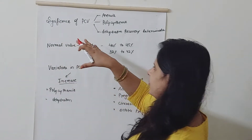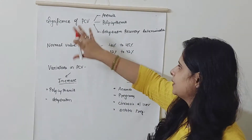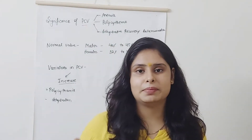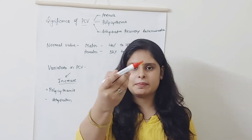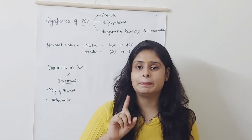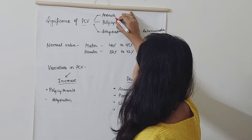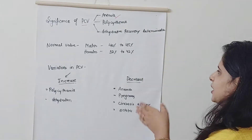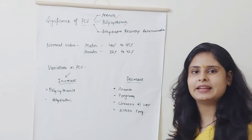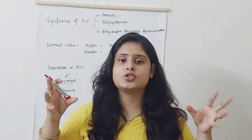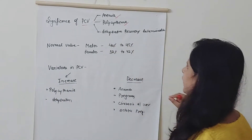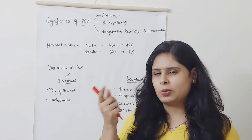First, let's talk about the significance — what is the benefit of doing a PCV test? PCV stands for Packed Cell Volume, which tells us the proportion of RBCs in the blood, expressed as a percentage. If PCV is low, that means anemia. If PCV is high, that means polycythemia — poly meaning many, cythemia meaning cells — so RBCs are increased in the body. We can also use PCV to determine dehydration recovery.